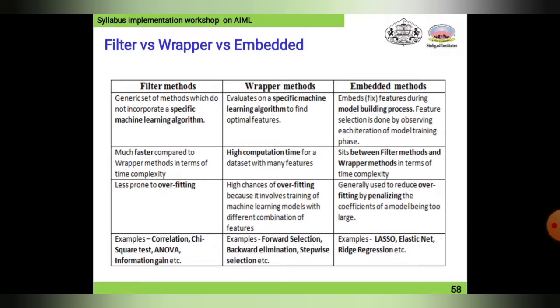Filter does not need to rely on external or specific algorithms. Wrapper method involves a specific machine learning algorithm to find optimal features — it uses specific learning algorithms like different nesting methods to find optimal features. The third one, embedded method, fixes features during the model building process; feature selection is done by overseeing each iteration in the model training phase.